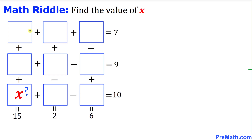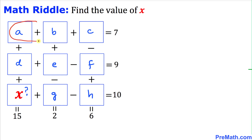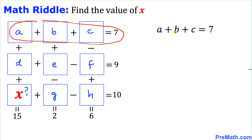Here's the very first step. Let's call the first box on the left-hand side a, the second b, this one c, likewise d, e, f, g, and h. Let's focus on the top three boxes: a plus b plus c equals 7.